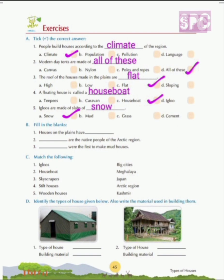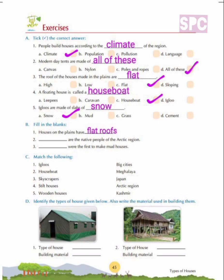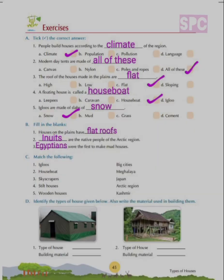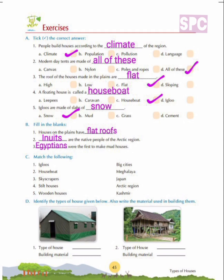Question B: Fill in the blanks. First, houses on the plains have flat roofs. Second, Inuits are the native people of the arctic region. Third, Egyptians were the first to make mud houses.